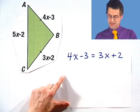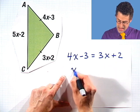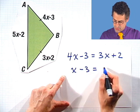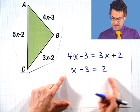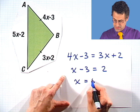And I can now solve this. If I subtract 3x from both sides, I see x minus 3 equals 2. And if I add 3 to both sides, I see x equals 5.